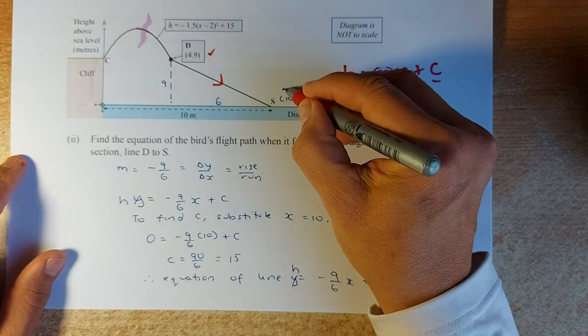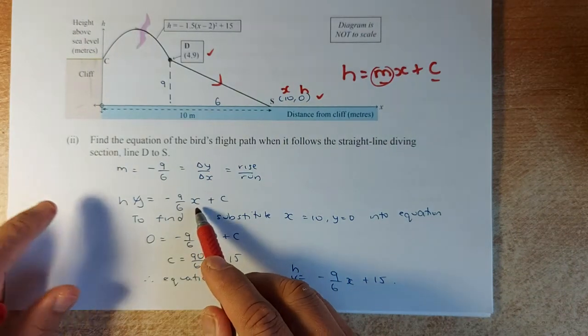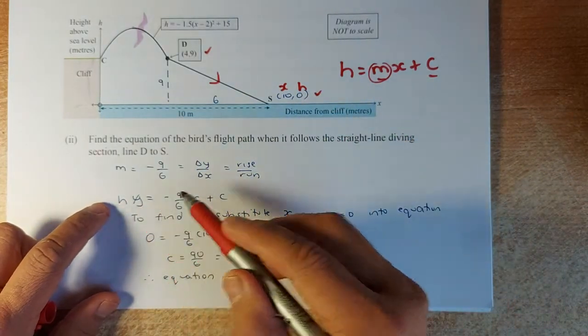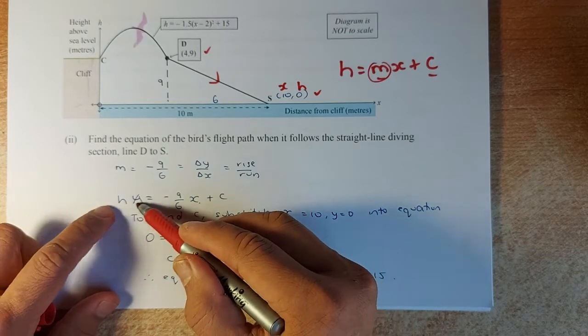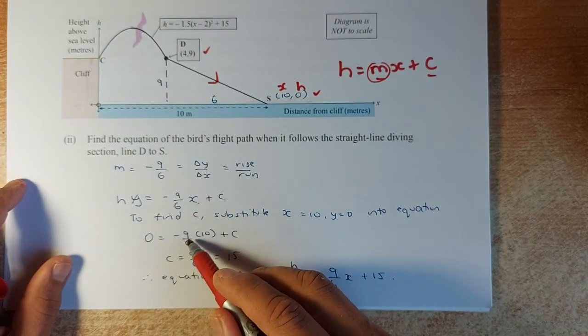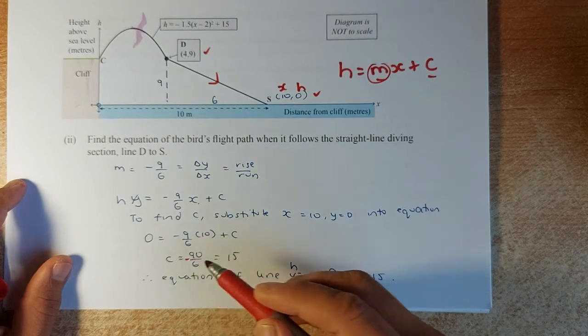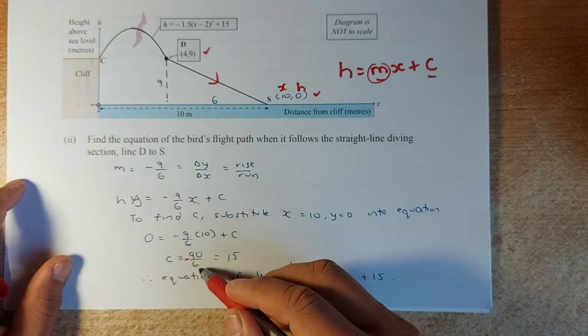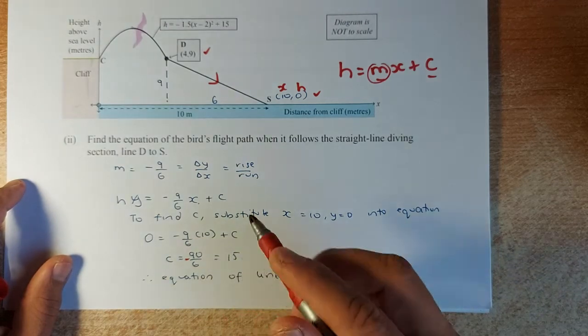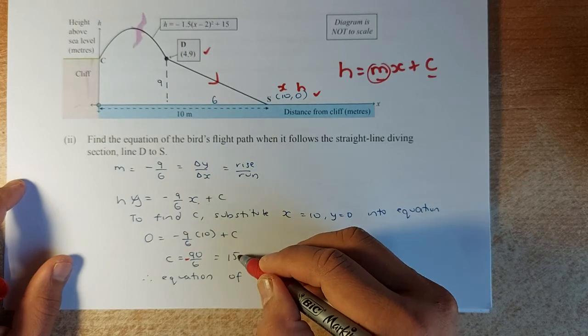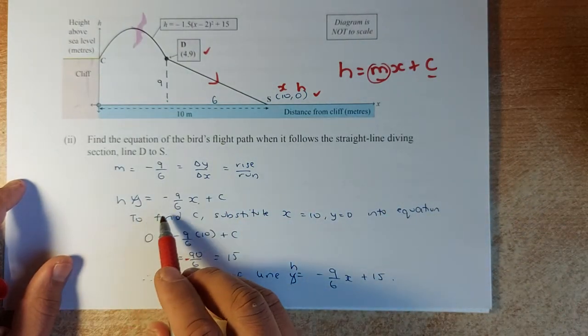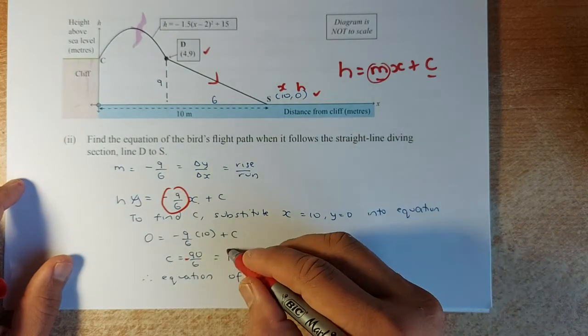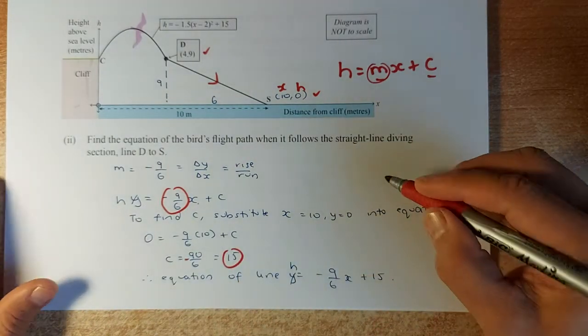Now to find your c, you substitute either point D or S. I decided to do S because it's easier. We substitute x equals 10 and h equals 0 into this equation. So 0 equals -9/6 times 10 plus c. That's -90/6 plus c. Adding 90/6 to both sides, which equals 15, we get c equals 15. So the final equation is h equals -9/6 x plus 15. That will give you a merit.